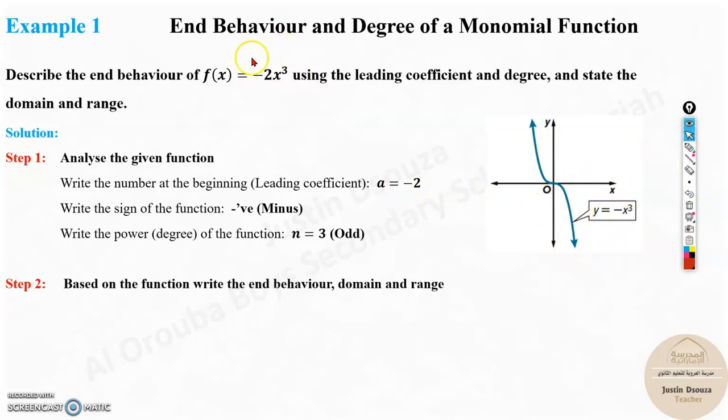Now, this is just the understanding from the given function. You can sketch this. It may not be appropriately correct. It is not exact graph, it is just an understanding. So now, from this understanding of the graph, this sketch of the graph, you can easily write the end behaviors.